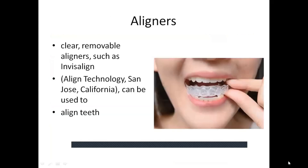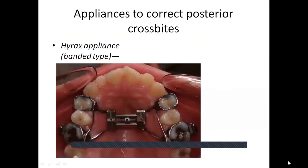Clear removable aligners (such as Invisalign) use a series of manufactured trays worn by the patient to align teeth. Additional attachments are usually required for specific tooth movements. Tooth movement control is not as precise as with fixed appliances, and patient cooperation is required for full-time wear.